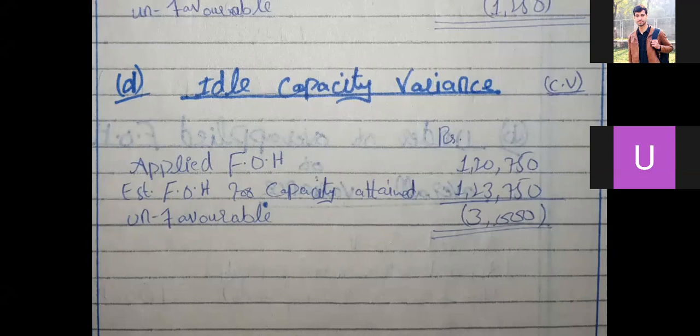There are additional things in this class. If you have the capacity variance and overall variance, there are ways to check them. I will tell you, because it may be a requirement of the question. You may be asked to check the ideal capacity variance and overall variance.